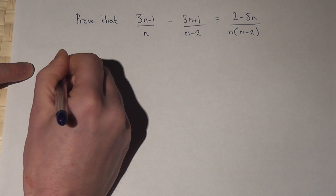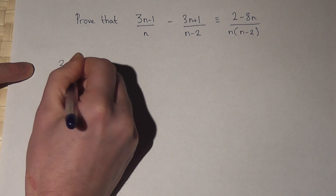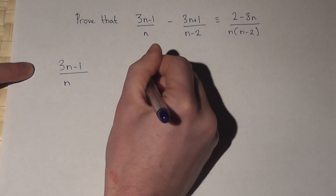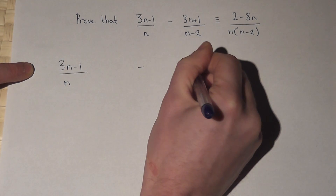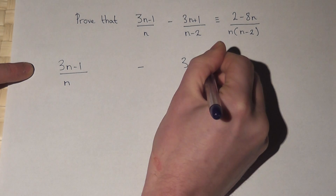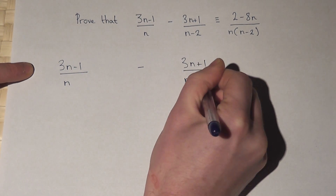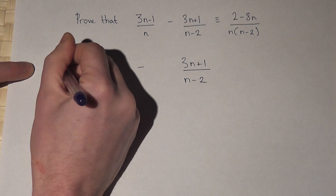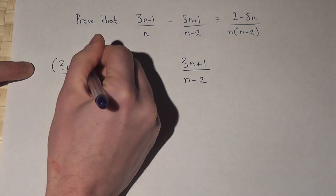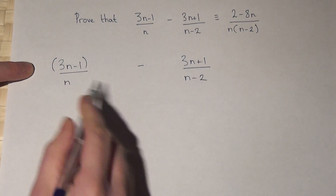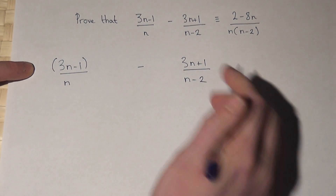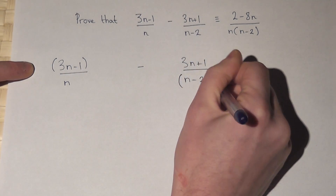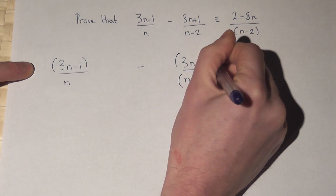I write out the first fraction with a slight gap, take away the second fraction. I then place brackets around that, because it's two terms. I leave the n as it is, a bracket here, and a bracket here.